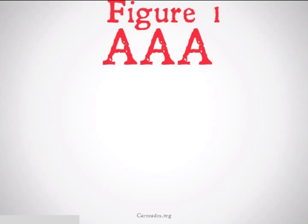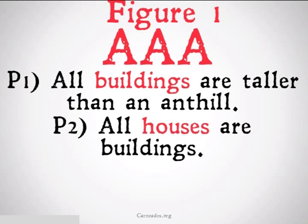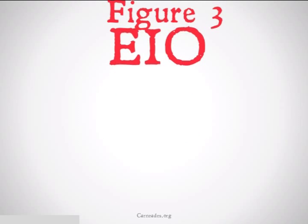Figure one, AAA: All buildings are taller than an anthill. All houses are buildings. Therefore, all houses are taller than an anthill. I've highlighted the distributed terms in red. We see that the middle term, buildings, is going to be distributed in the first premise. So this is going to pass rule one.